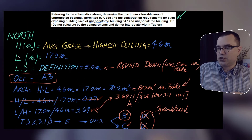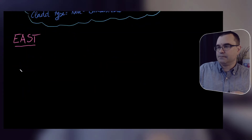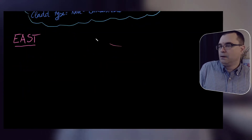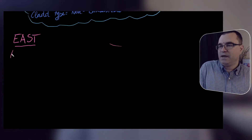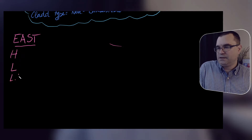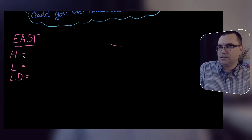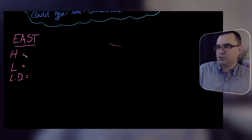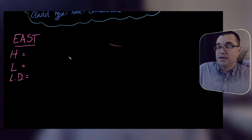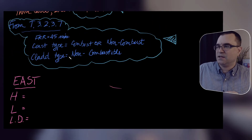We had H, L, and limiting distance. Let's do that — H, L, and limiting distance for the east face. All these dimensions I'm getting in meters. So let's go back to our drawing. We want to look for the vertical dimension of the east face, the horizontal dimension of the east face, and then limiting distance.